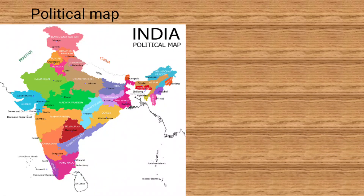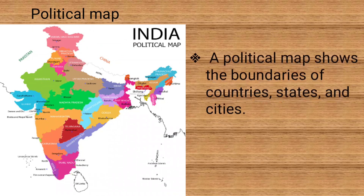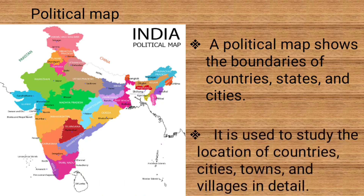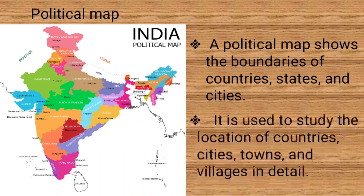Political map. A political map shows the boundaries of countries, states and cities. It is used to study the location of countries, cities, towns and villages in detail.